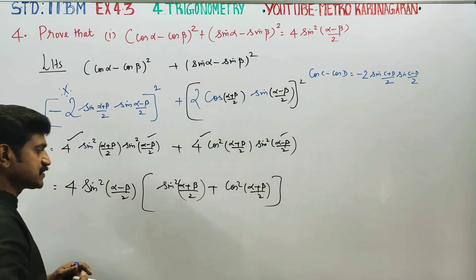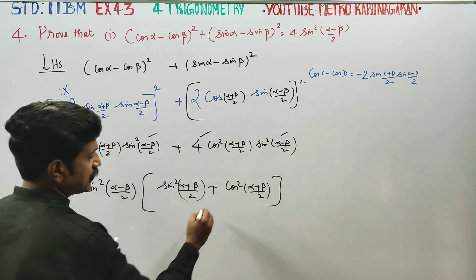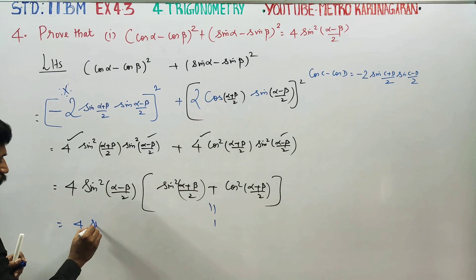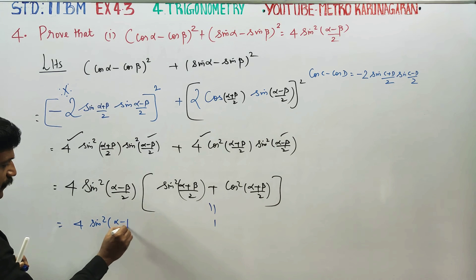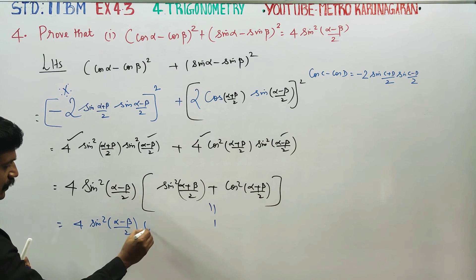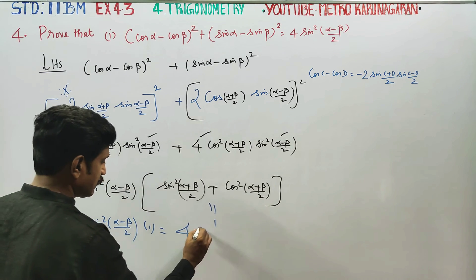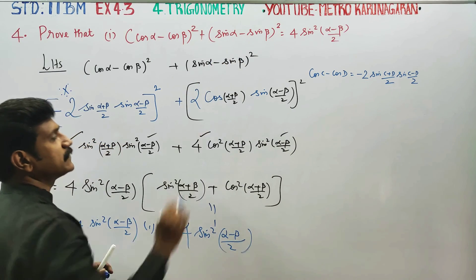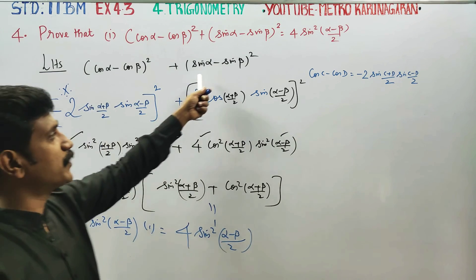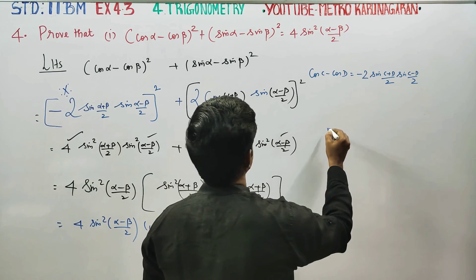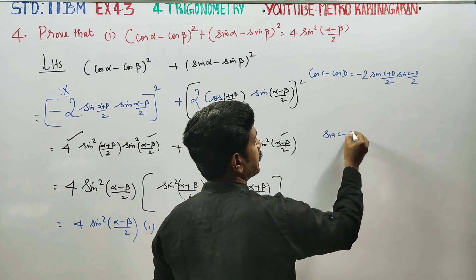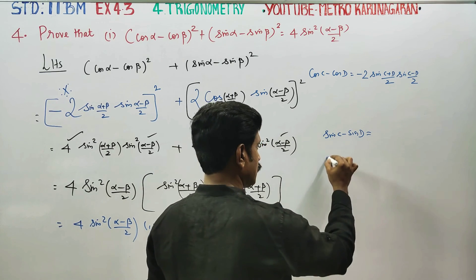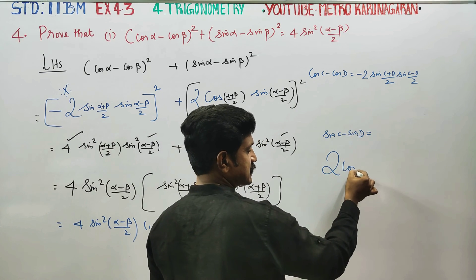We find sin squared theta plus cos squared theta equals 1. So sin squared alpha plus beta by 2 plus cos squared alpha plus beta by 2 equals 1. Therefore: 4 times sin squared alpha minus beta by 2 times 1. The answer is 4 sin squared alpha minus beta by 2. This completes the proof.